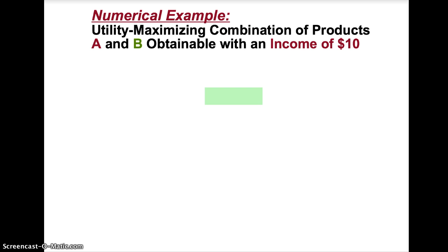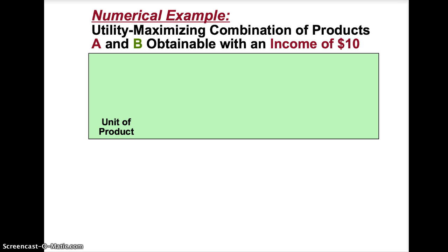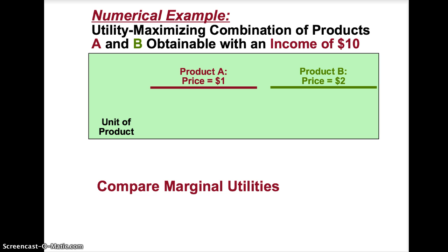Let's look at the utility maximizing combination of products A and B that a consumer can purchase with an income of $10. Product A costs $1 and product B costs $2. First, we are going to look at marginal utility to ensure these products are providing satisfaction to the consumer. Marginal utility for the first unit of product A is 10 and marginal utility for the first unit of product B is 24.